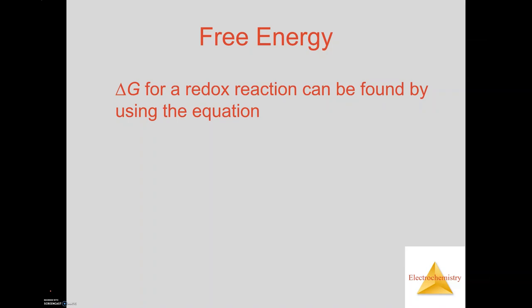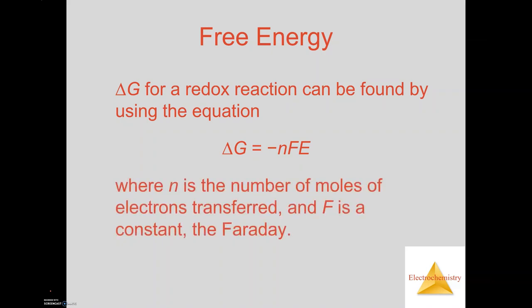So the equation that we use for solving for Delta G, if we know the cell potential, is Delta G equals minus nFE. N represents the moles of electrons that you determine from the balanced half-reaction method. F is Faraday's constant, which is 96,485. There's two different unit sets for Faraday's constant: coulombs per mole or joules per volt per mole. The one on the right-hand side, joules per volt per mole, will actually be more commonly used.